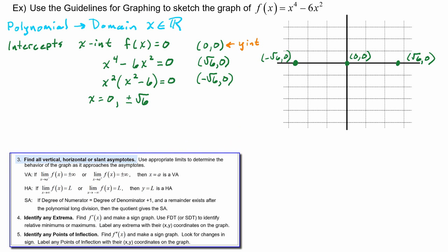Next, finding vertical, horizontal, or slant asymptotes. Because we have a polynomial, there are no asymptotes of any kind.